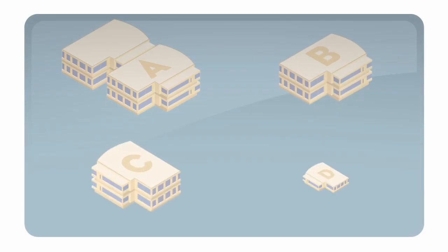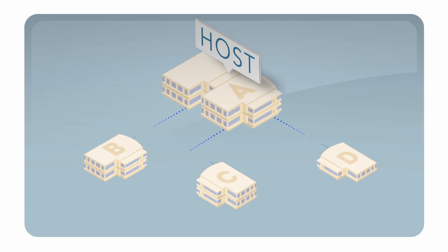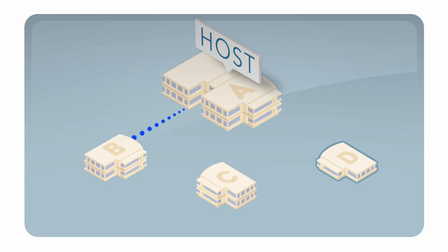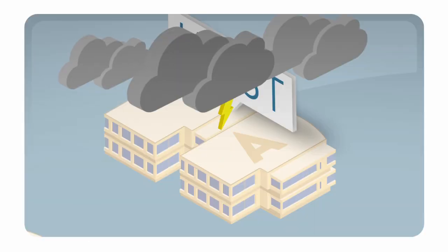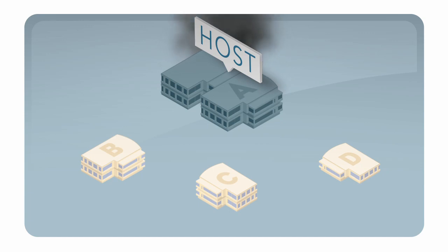Say your company has four different office locations. In a traditional scenario, one office would serve as the host location. Each of the remote offices is connected directly to the main office. Should Office B want to share information with Office D, communication has to route through the host before being transferred to its final destination. This process can consume large amounts of bandwidth. In addition, if something happens to the host, connectivity among the other locations will be lost.